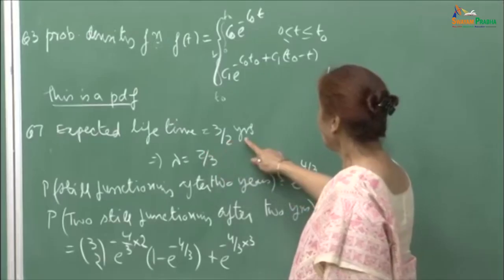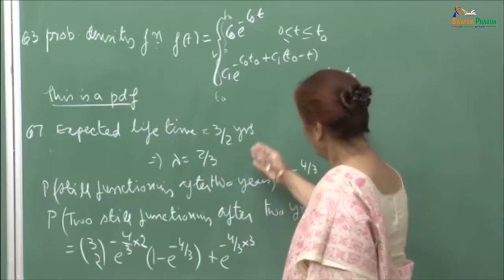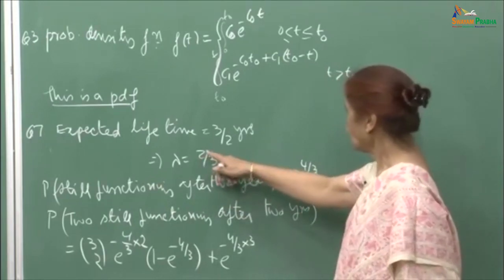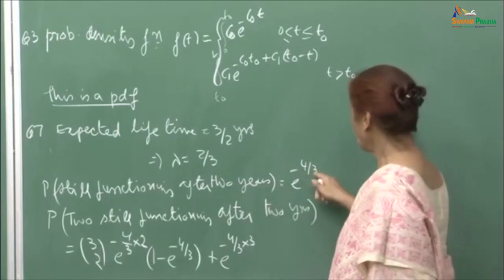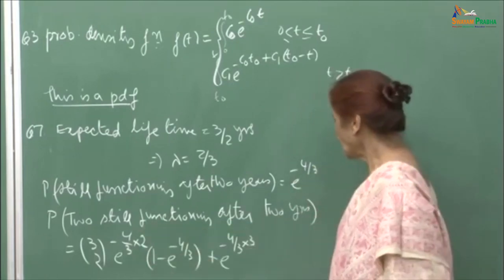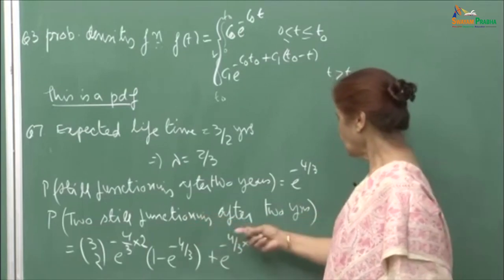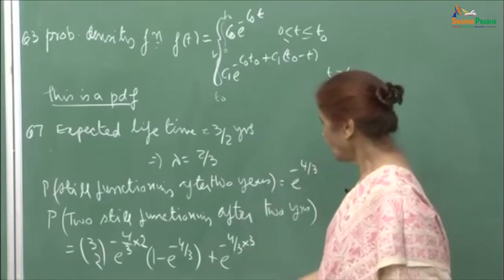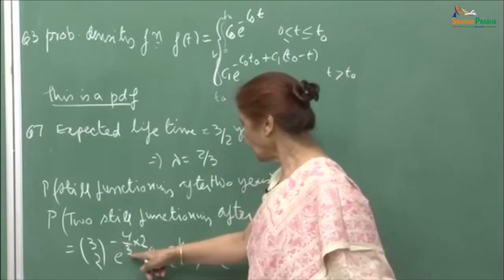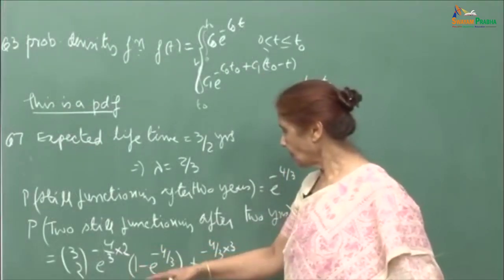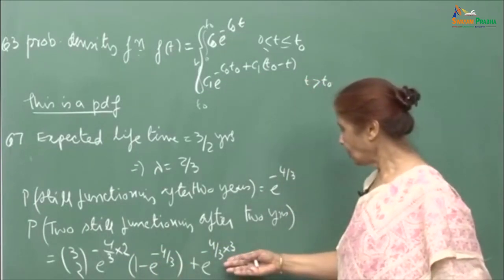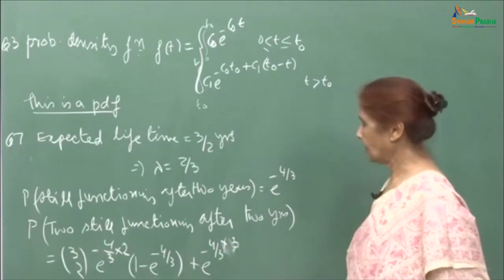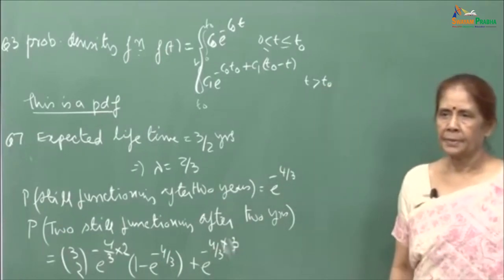Question 7: Expected lifetime is 3/2 years, so λ = 2/3. The probability that it is still functioning after 2 years is e^(−4/3). For the probability that at least 2 out of 3 identical units are still functioning after 2 years, you consider either exactly 2 functioning — C(3,2)·e^(−4/3)²·(1 − e^(−4/3)) — or all 3 functioning — e^(−12/3). Sum these two terms to get the required probability.